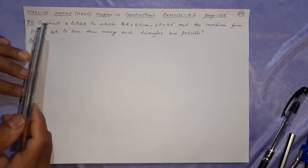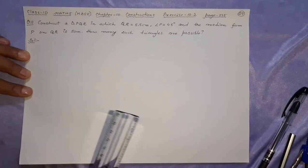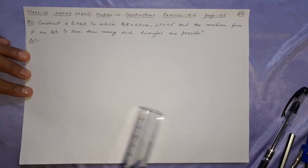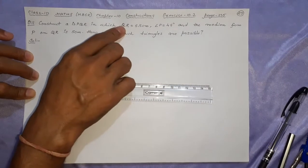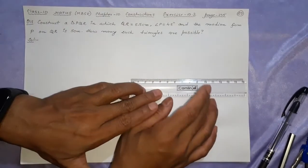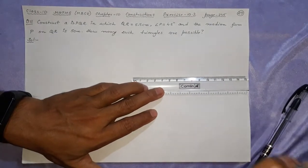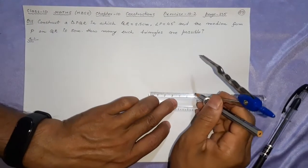Here we are doing something almost similar to your question number 10. Again it is a median question, so it will be shorter than the altitude question. Let's start directly. Here you have to make QR in place of BC. The name is just replaced, QR in place of ABC. Make here somewhere 5.5.